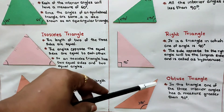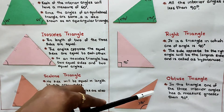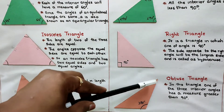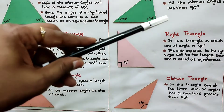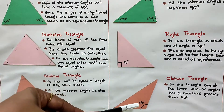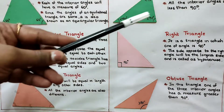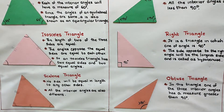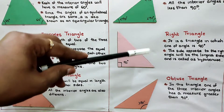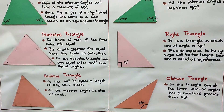The third one is obtuse triangle. In this triangle, one of the three interior angles has a measure greater than 90 degrees. So the three types classified by angle are: acute triangle, right triangle, and obtuse triangle.